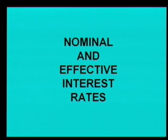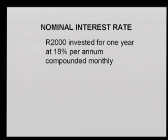Now we're going to have a look at the nominal rate and effective rate, but for now let's start with the nominal rate. If we look at this example: R2000 invested for one year at 18% per annum compounded monthly. If we look at 18% per annum, this is just a quoted rate as an annual rate.